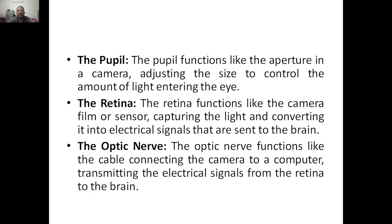Next is the pupil. The pupil functions like the aperture in a camera. The aperture is for adjusting the size to control the amount of light entering the eye. We can adjust different sizes — like zooming and such things. The pupil adjusts the size to control the amount of light entering the eye. So the pupil acts as an aperture.